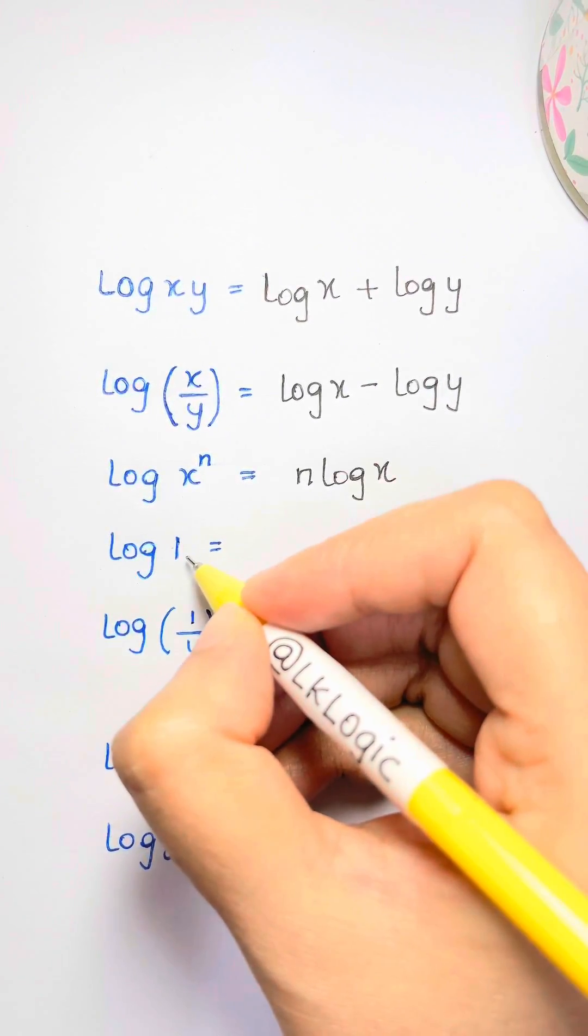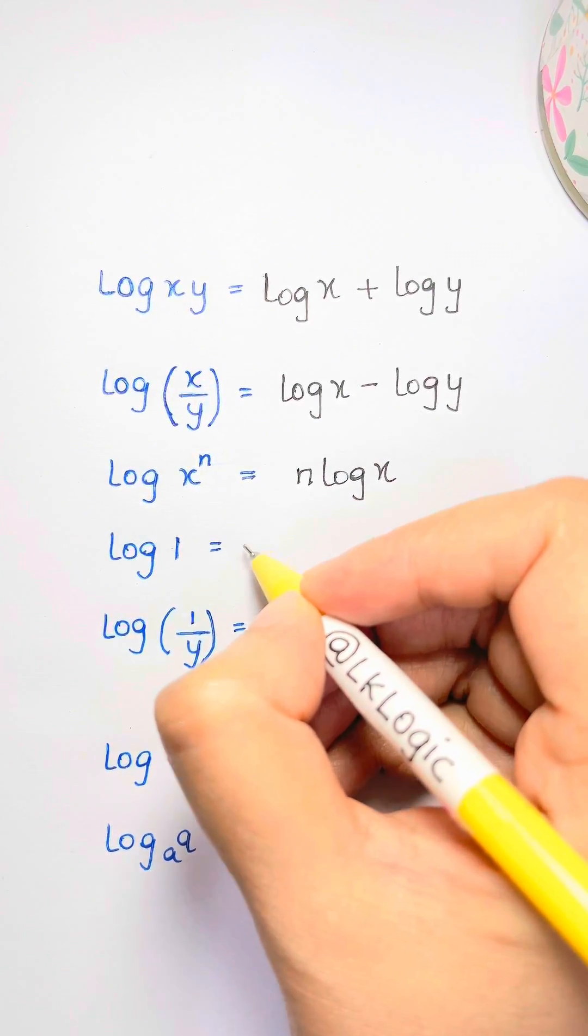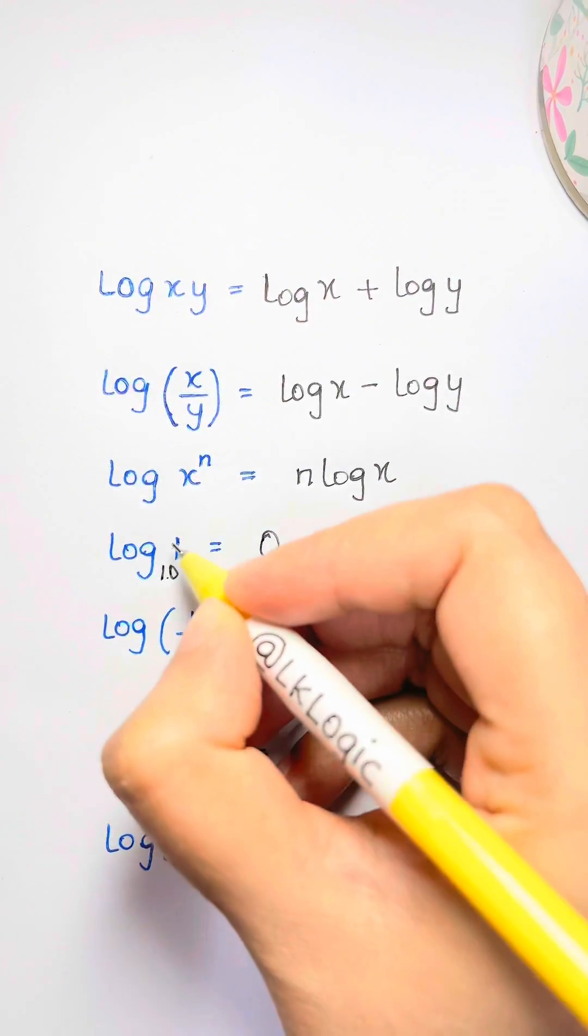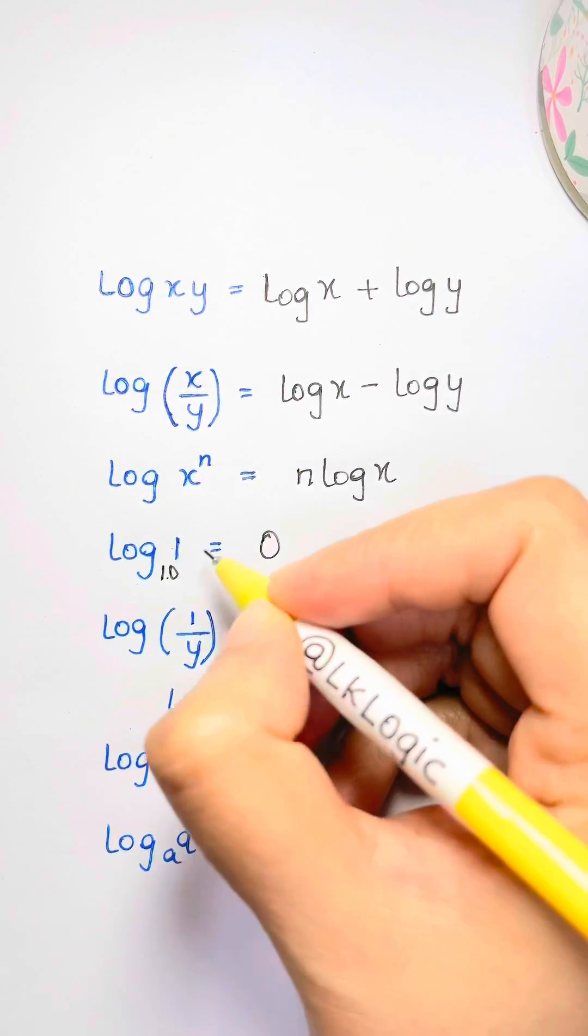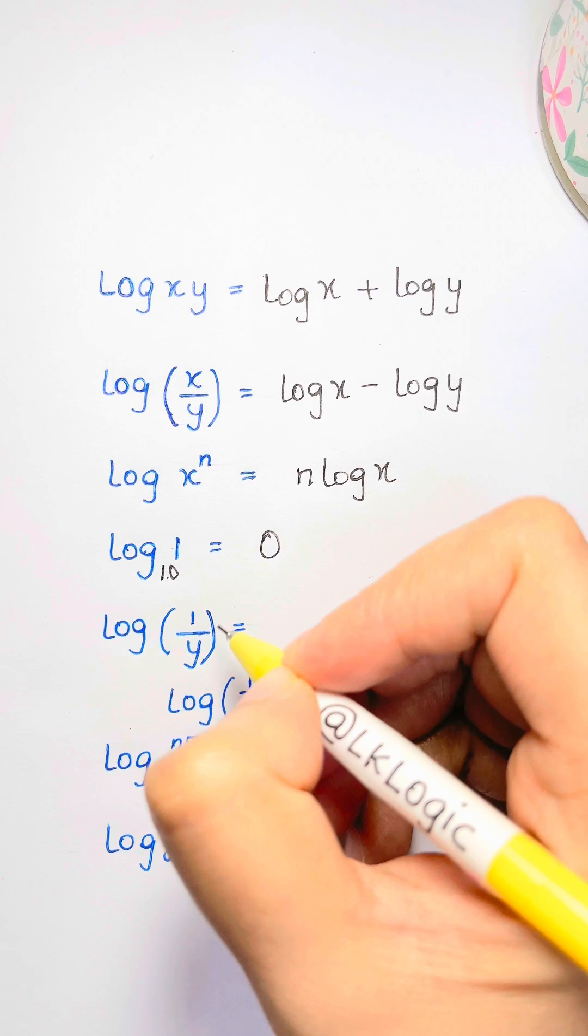Here, you have log of one. Well, anything to the power of zero is one. Remember, log means log base 10, right? What does log mean? It's saying 10 to the power of what is one. 10 to the power of zero is one. You can even change the base. Log of anything of one is always zero.